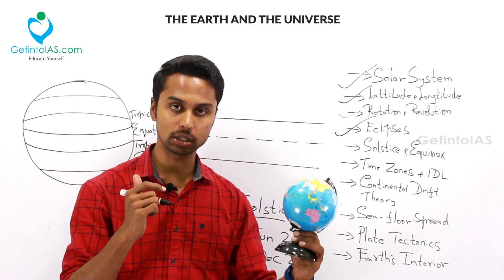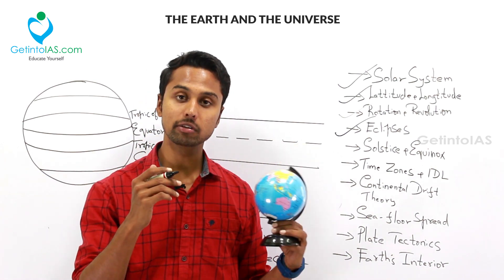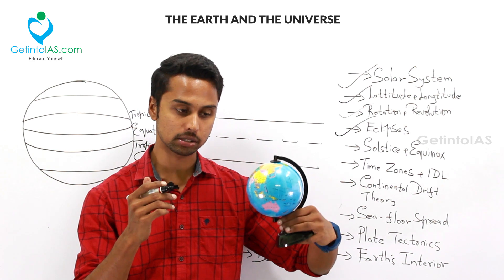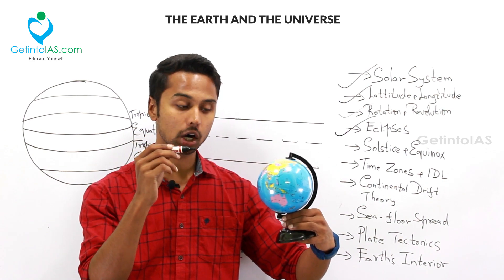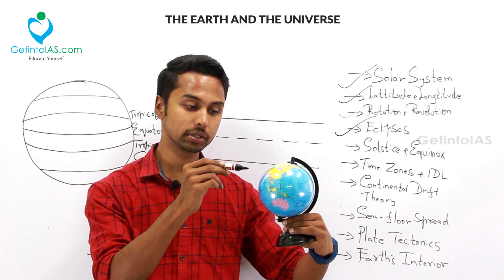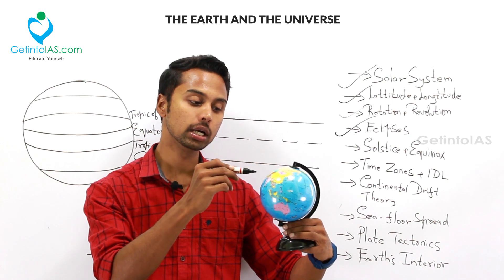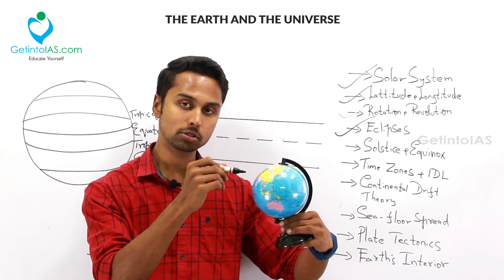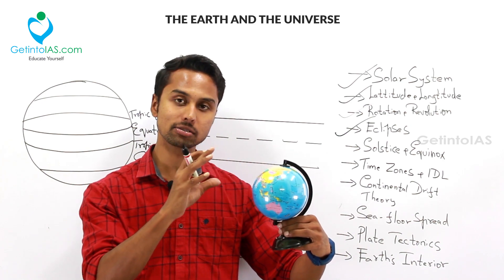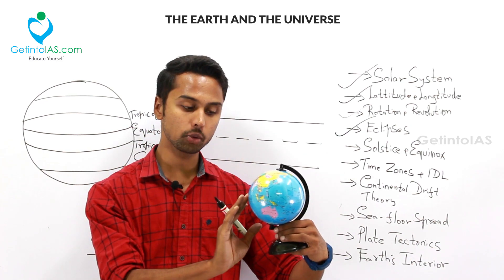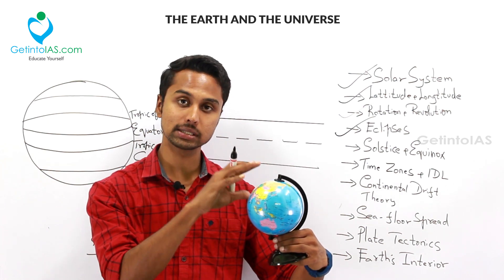During northern solstice, as the earth moves in its elliptical orbit, the earth will be in such a position that the sun's rays will fall directly overhead on the Tropic of Cancer, which is on the northern part. So more sun's rays will be falling on the northern part.